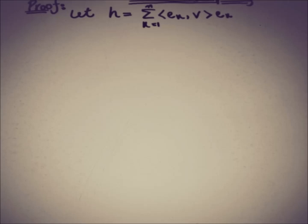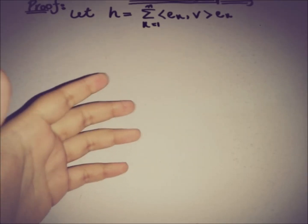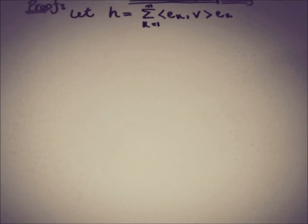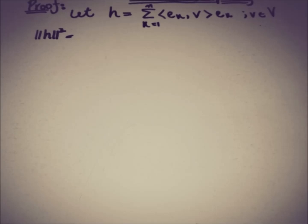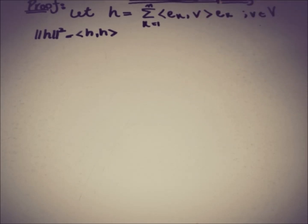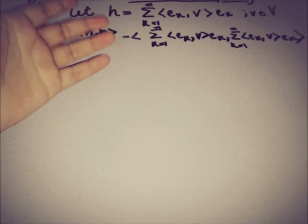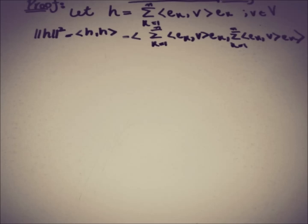Let h equal the sum of ⟨e_k, v⟩ · e_k, where v is an element of the inner product space and k varies from 1 to n — we have named this for simplicity. Now if we take the norm of h, we have ||h||² equal to the inner product of h with itself. We substitute the value of h: h equals the sum of ⟨e_k, v⟩ · e_k, and then multiply it with itself.